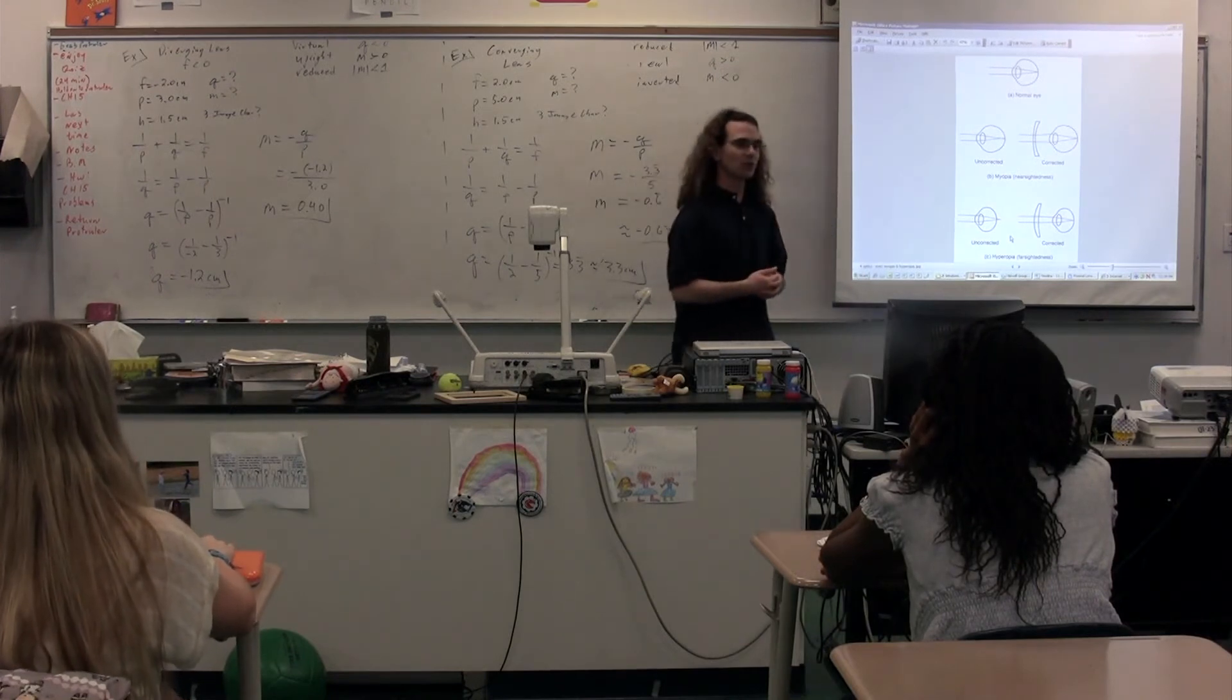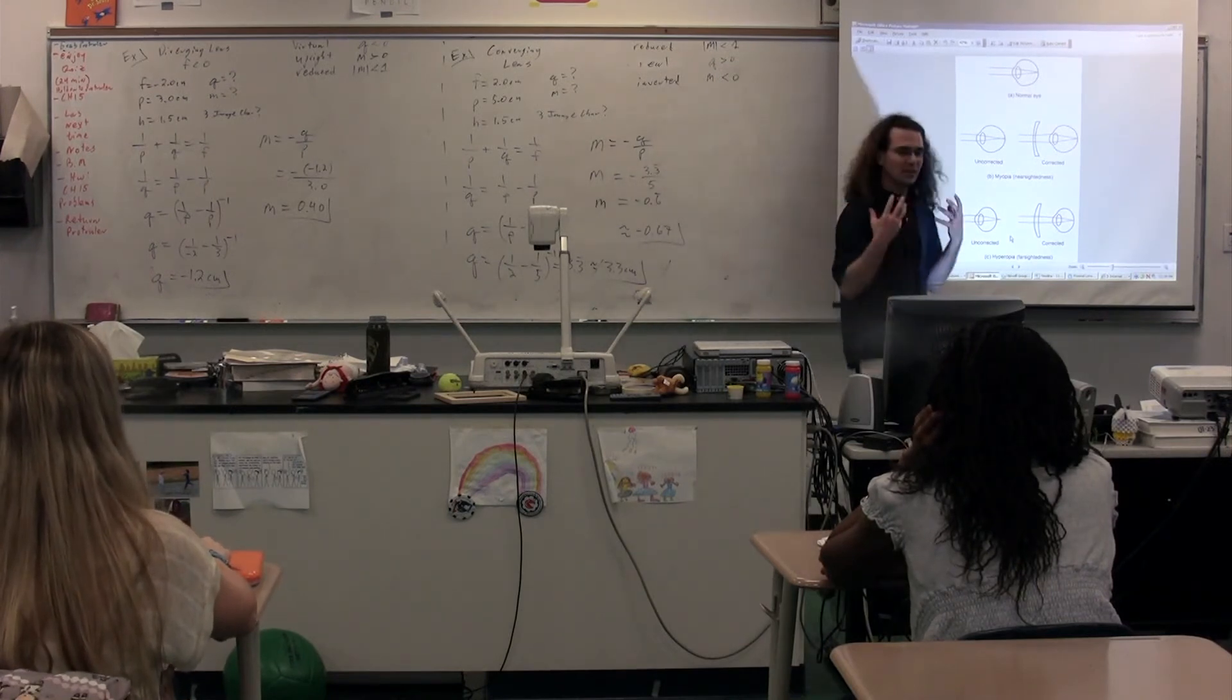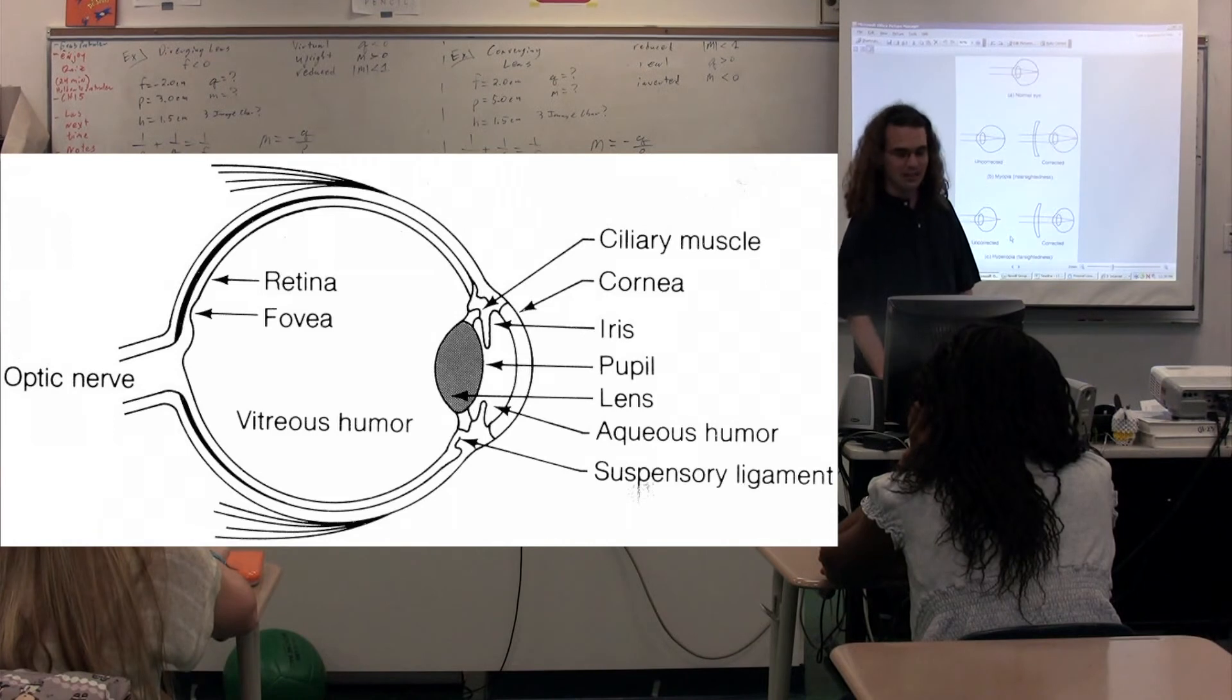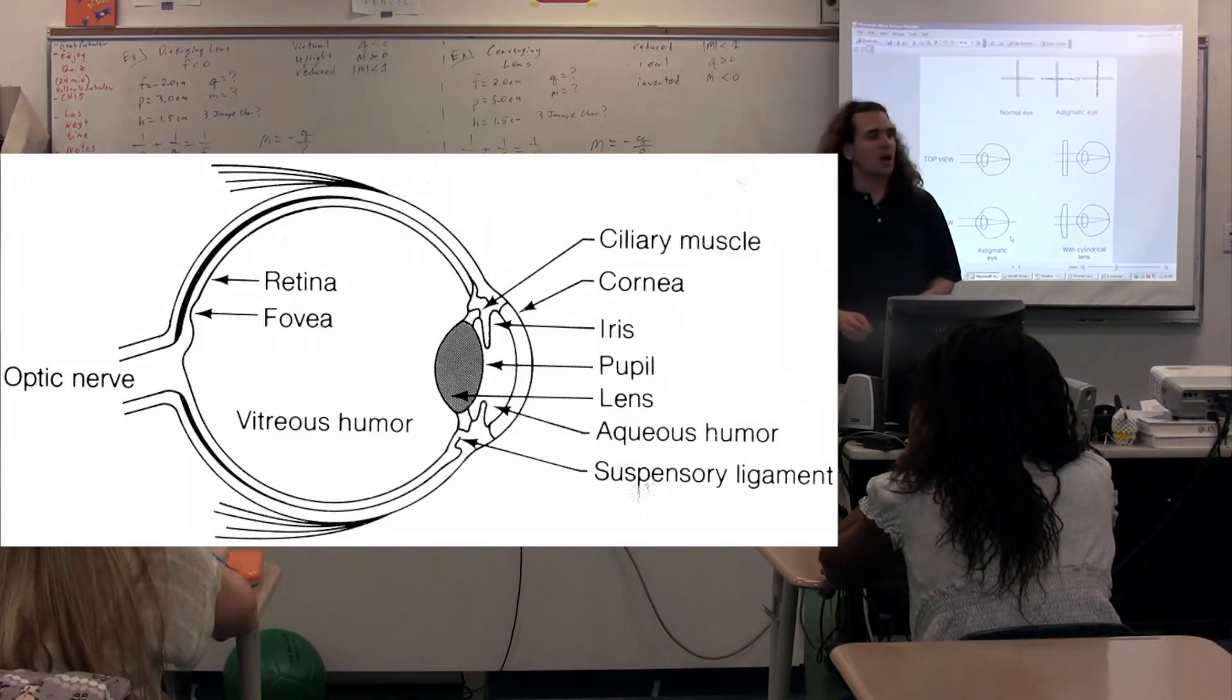Therefore, everyone, as you get older, will need reading glasses because you can't change the shape of your lens enough with the ciliary muscles. You just can't do it. Lastly, the concept of astigmatism.